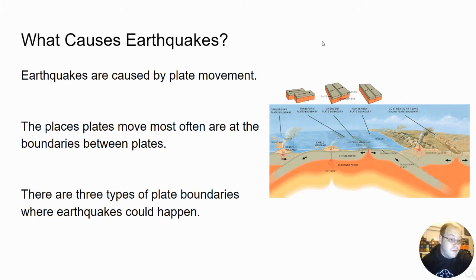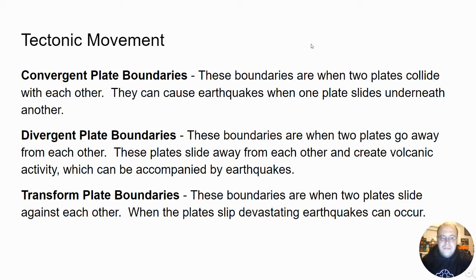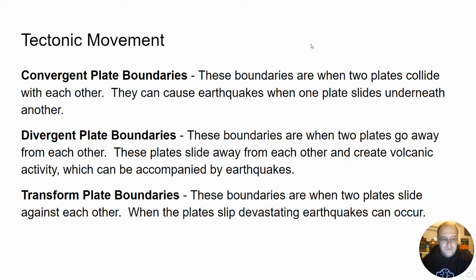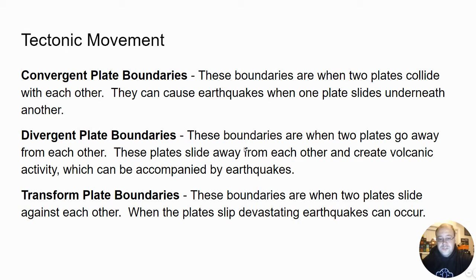Those are the three types, and that's where earthquakes are going to be happening because that's where the plates are moving the most. Convergent plate boundaries happen where there are a lot of mountains, because generally one plate gets pushed underneath the other and pushes it up, creating mountain ranges and volcanoes — like the Andes Mountains in South America or Japan. Divergent plate boundaries are where two plates get pushed away from each other, creating volcanic activity, and the biggest one is in the Atlantic Ocean. Transform plate boundaries are where plates slide against each other, and the most famous one in the United States is the San Andreas Fault in California.